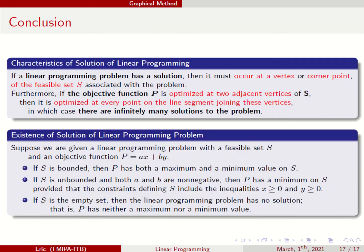The conclusion is: if a linear programming problem has a solution, it must occur at a vertex or corner point of the feasible set. If the objective function is optimized at two adjacent vertices, then it is optimized at every point on the line segment joining these two vertices — in which case, there are infinitely many solutions to the problem.